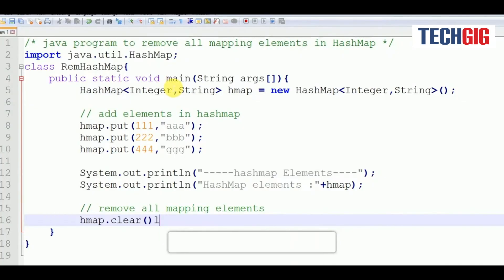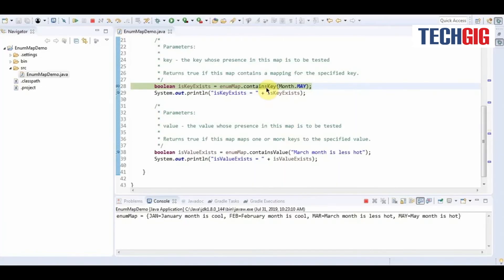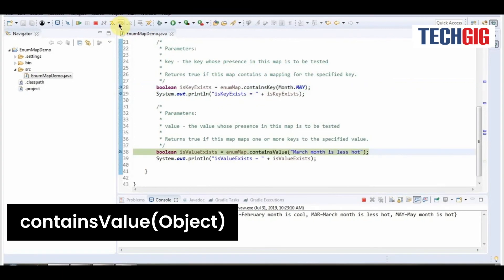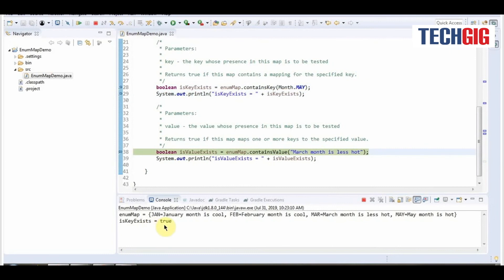ContainsKey function's main goal is to check whether a given key is mapped in the map. The key is used as a parameter in this case. If the key element is mapped in the map, it returns true. ContainsValue determines whether a given value in the map is mapped by this method.